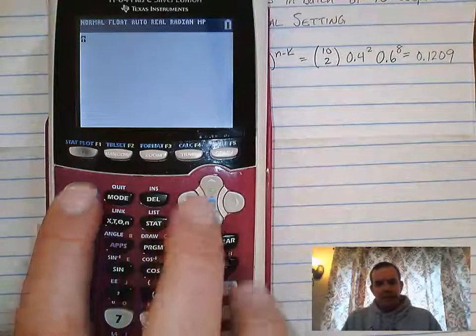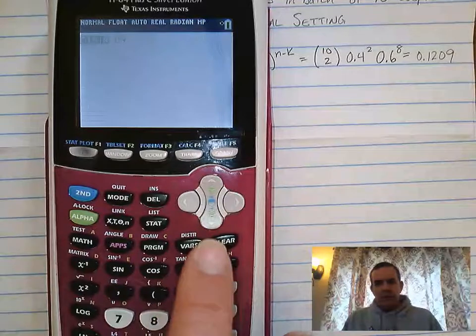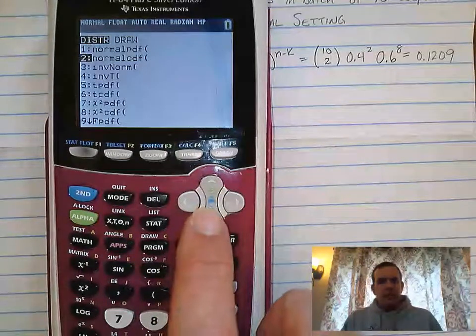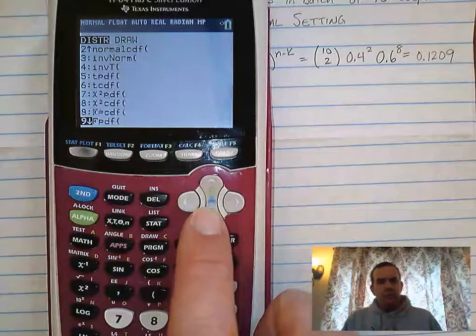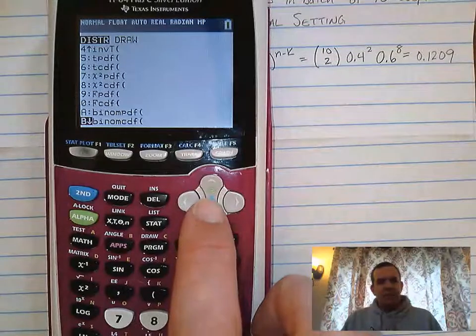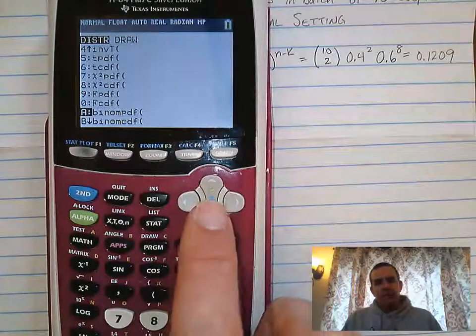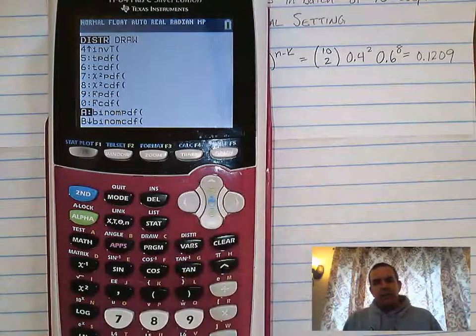You're going to press the second button here. You're going to press VARS. And you're going to arrow until you find binomial PDF. So it's on this one, letter A is binomial PDF. That's our exact. We hit enter there.